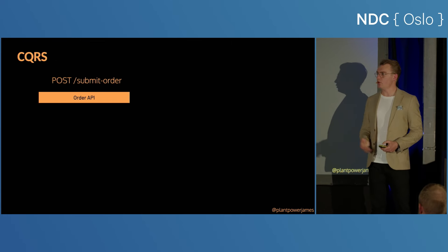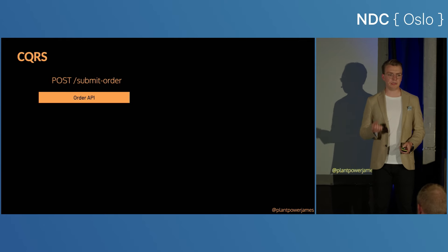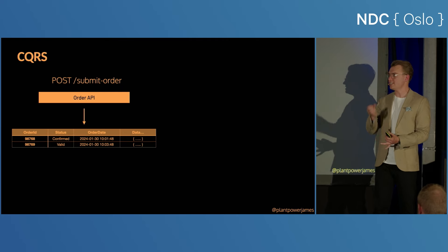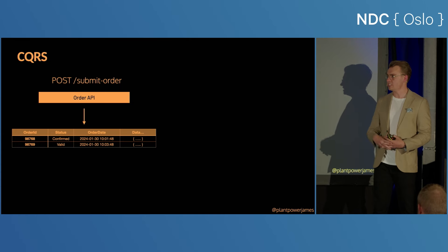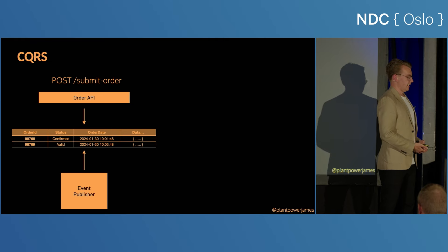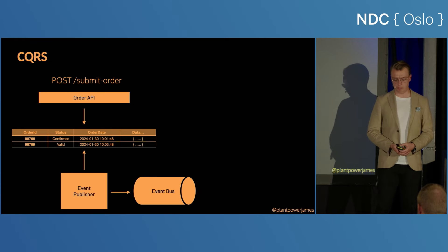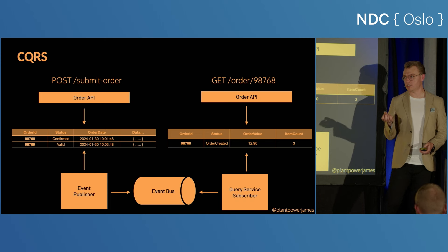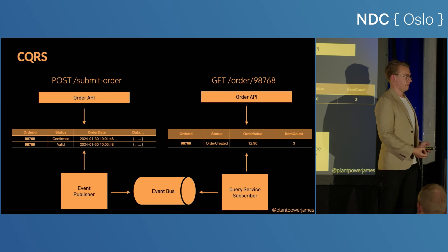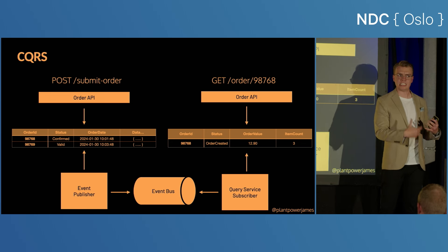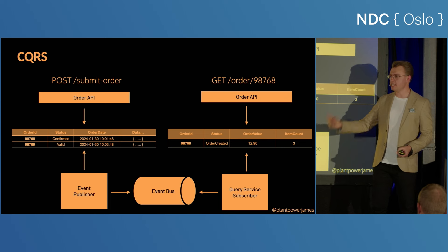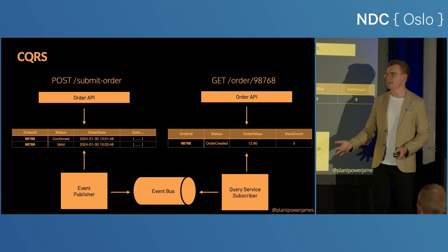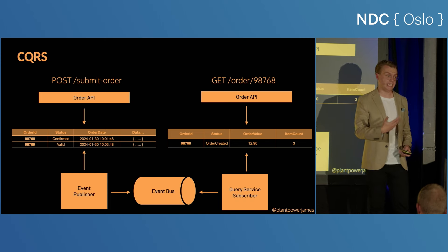One of the benefits of working this way is that you can make your query model incredibly performant. The create order request gets written to your primary database — the source of truth for the current state of the system. That event gets published onto the bus, consumed by your query service, which creates a highly optimised read model. This could even be a cache. I've built a system in the past where queries needed to be incredibly high-performance and writes were really complex, so instead of the query system being a database, it was simply a cache. When the get-order request comes in, it responds incredibly quickly. And if that cache were to go away, you can simply rehydrate it from the command database, which is your primary data store.